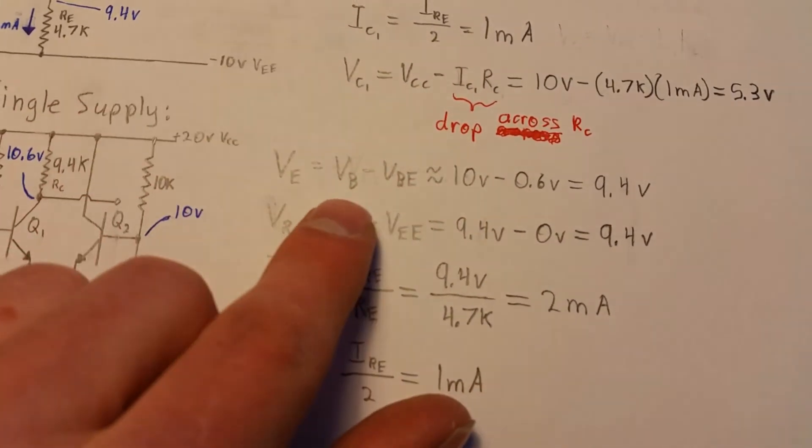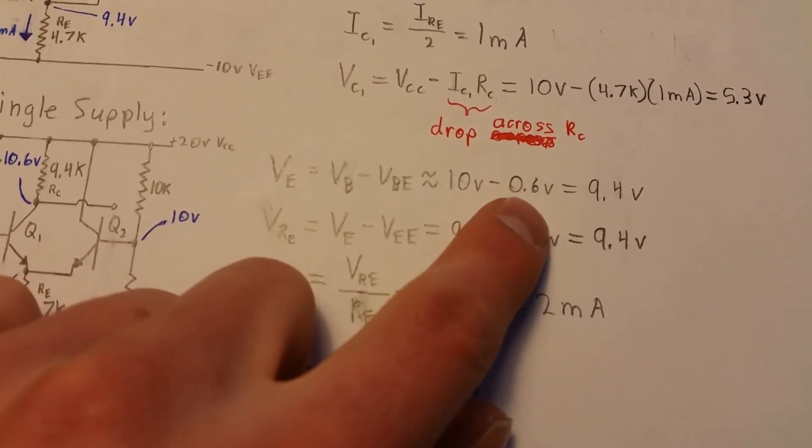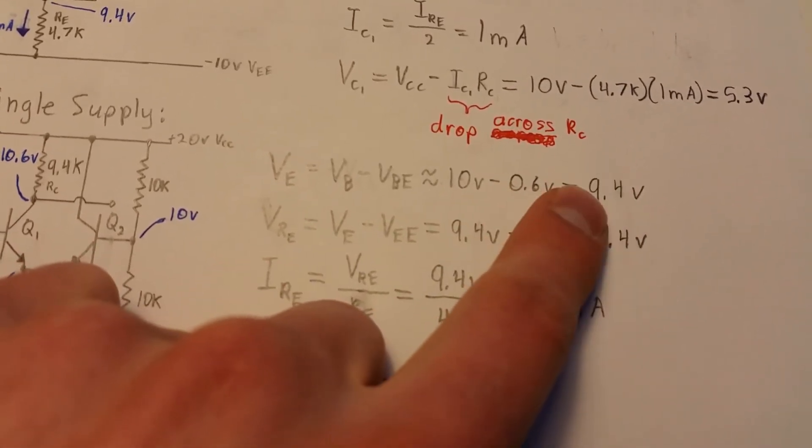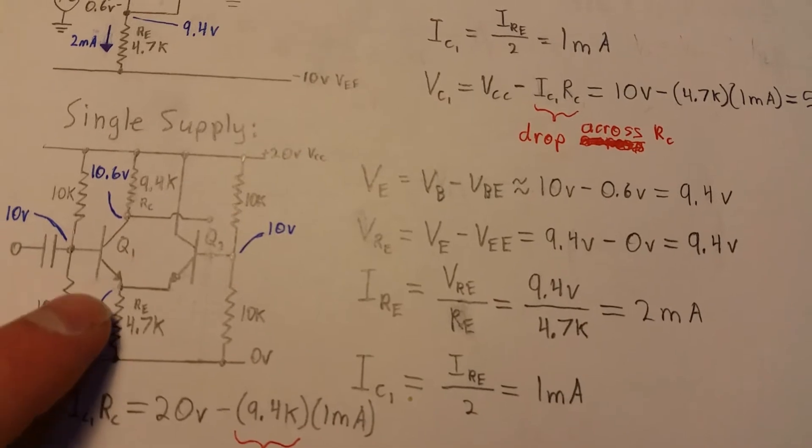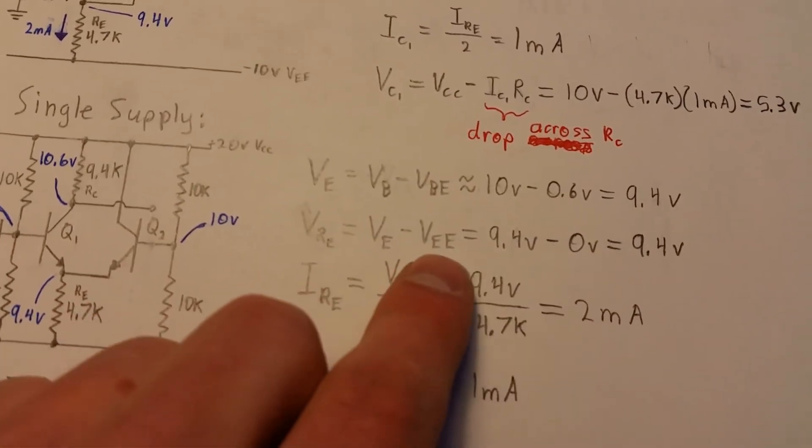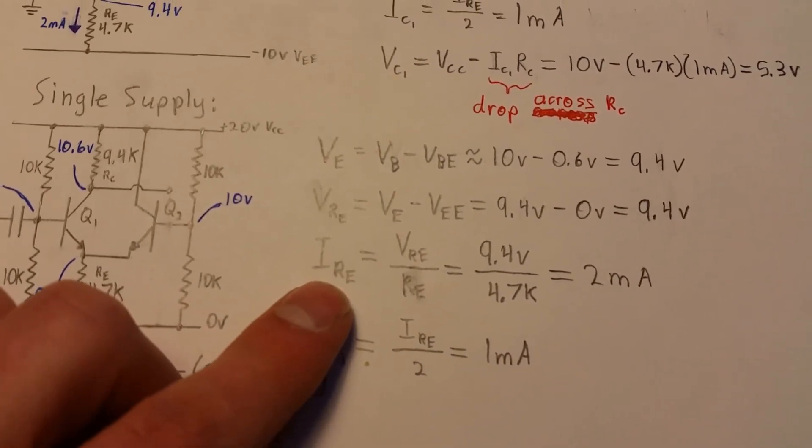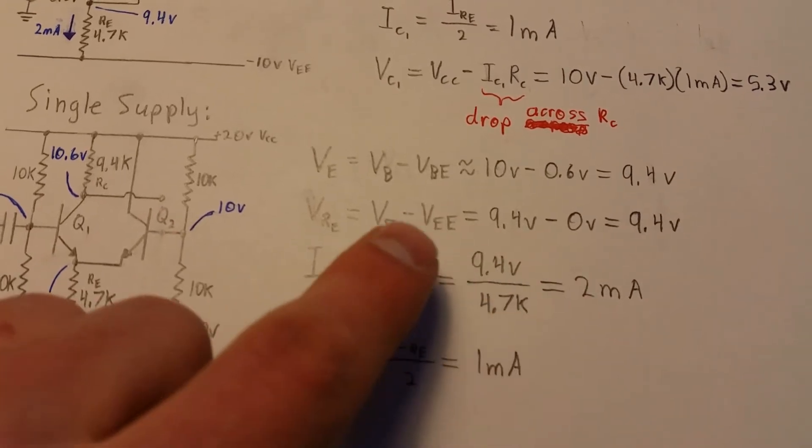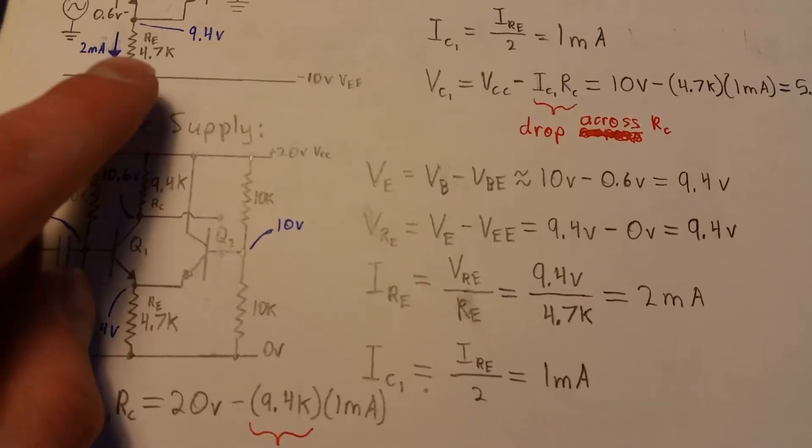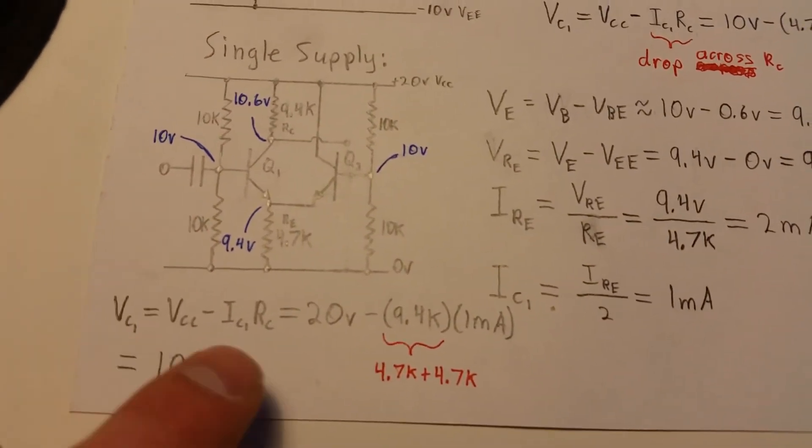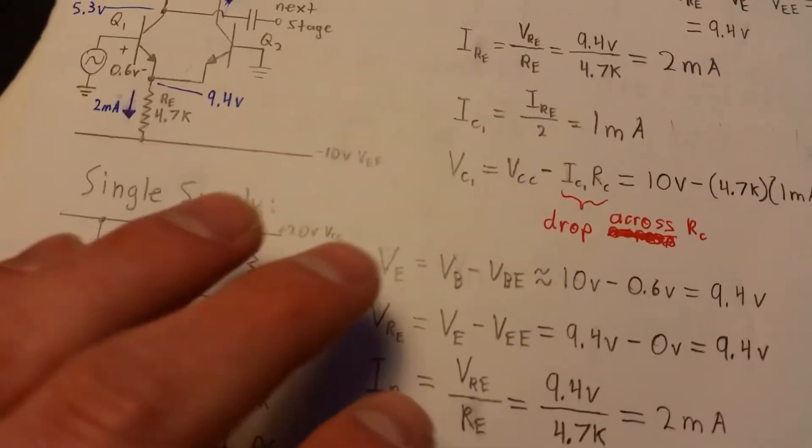And then the same 4.7 for the emitter. And it's a similar calculation, except VB is not zero. That's why this is in the equation here. So it's 10 volts now minus 0.6, usually 9.4 volts. And you know that the drop across the resistor is still 9.4 because VEE is now zero. The current through that resistor is still going to be 2 milliamps. You're still going to get 1 milliamp through the collector again. Do the collector voltage calculation, you get 10.6 volts on the collector.